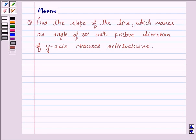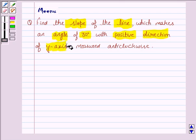Hello and welcome to the session. Let us discuss the following question: find the slope of the line which makes an angle of 30 degrees with the positive direction of y-axis measured anticlockwise.